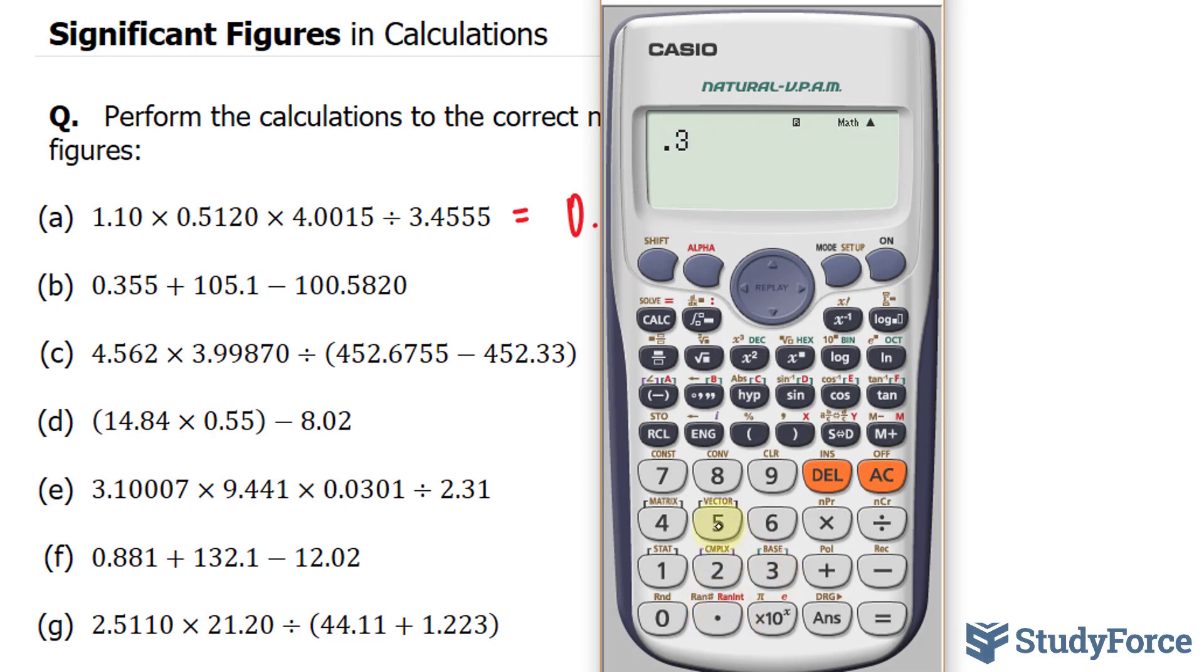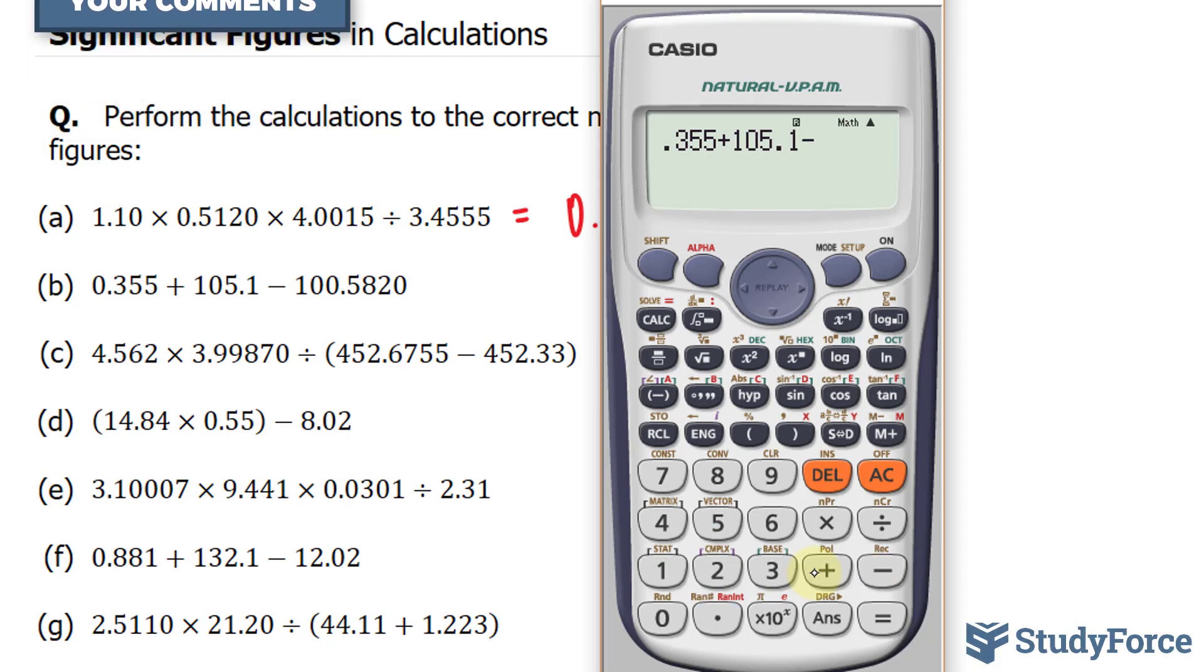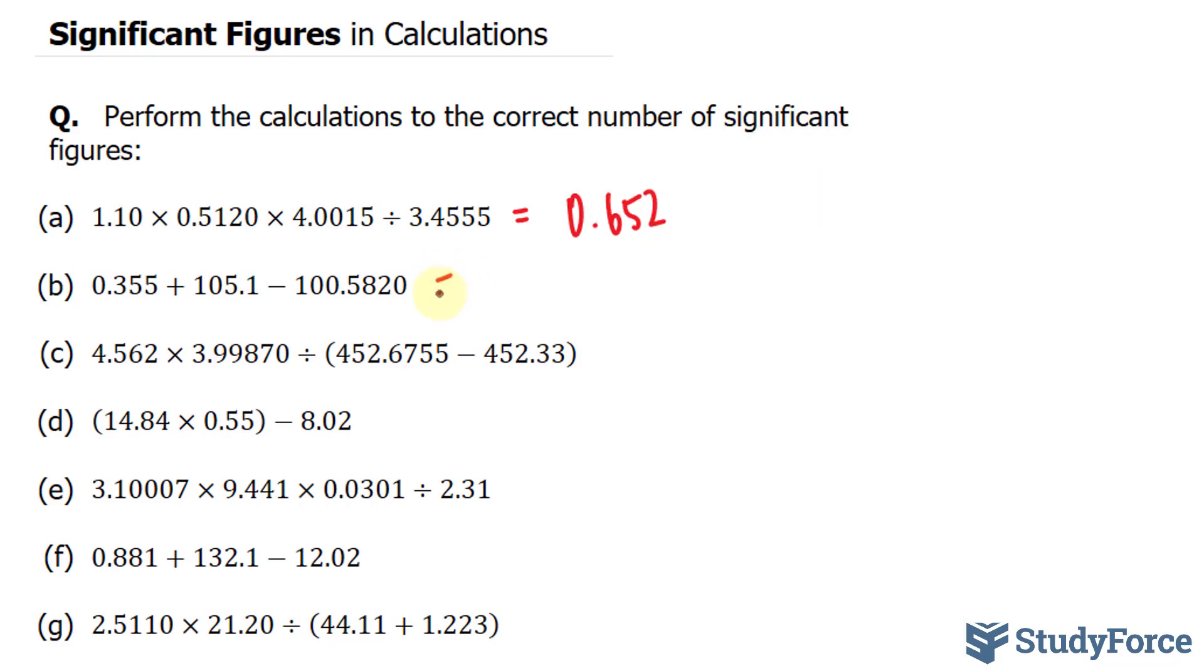0.355 plus 105.1 minus 100.5820 gives us 4.873. Therefore, our final answer needs to be 4.9 because this 7 is greater than 5 and it's the first number that we have to discard. So this becomes a 9. 4.9 is our final answer.